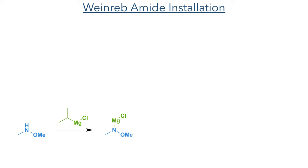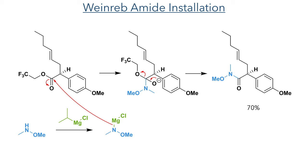The next reaction involved the installation of a Weinreb amide. Dimethylhydroxylamine was reacted with isopropylmagnesium chloride, which acted as a base and formed the negatively charged nitrogen nucleophile that added to the ester. This forms a tetrahedral intermediate which eliminated the trifluoroethanol group, forming the Weinreb amide in a 70% yield.